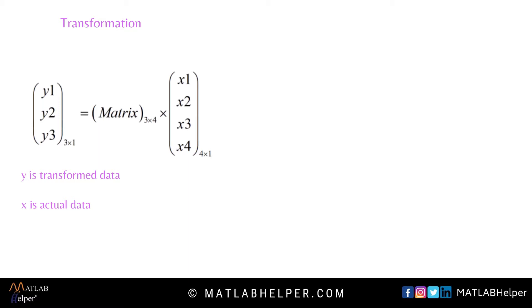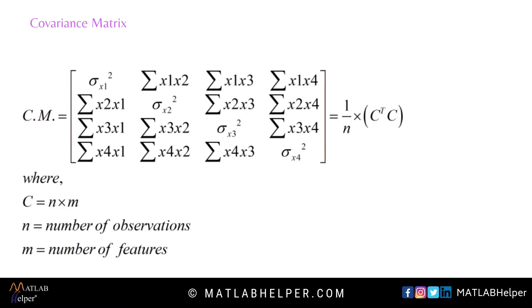The question is how we will get the transform matrix. If we multiply a three-by-four matrix by a four-by-one matrix, we will get a three-by-one matrix. So the goal is to find such a matrix. This matrix is the covariance matrix, and here you can see the mathematical form of the covariance matrix for four features. This matrix is symmetrical and is a four-by-four matrix.